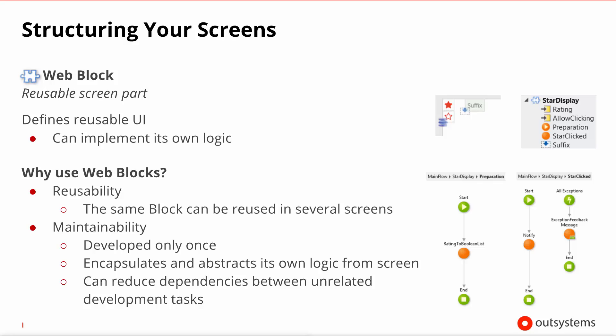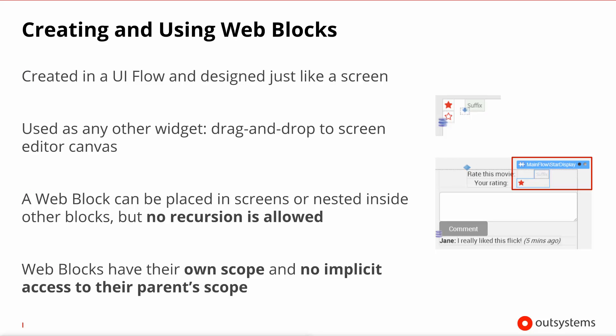So how do we design a new web block? You create a web block exactly like you would create a screen. You place it on the UI flow and design it by dragging any widgets inside. You can then use a web block by dragging it inside a screen where you want to instantiate that web block.